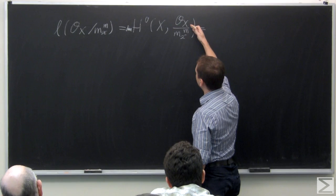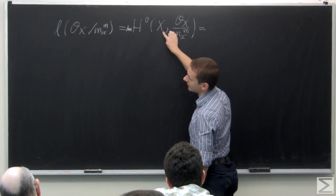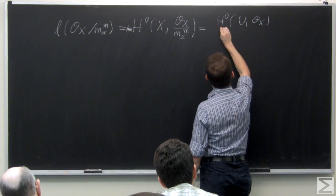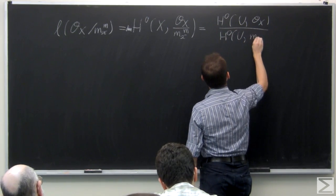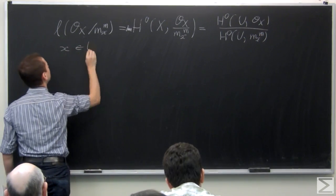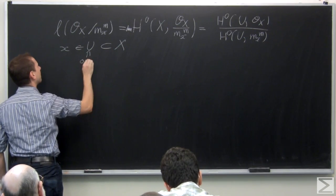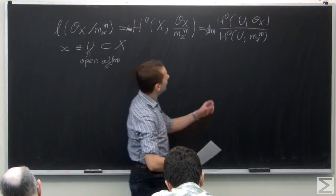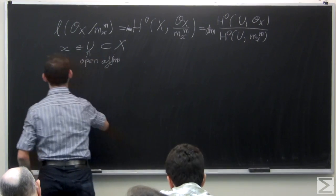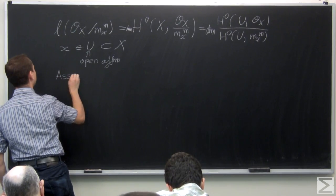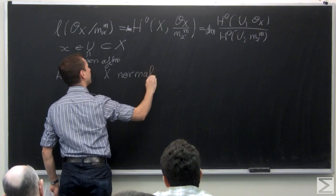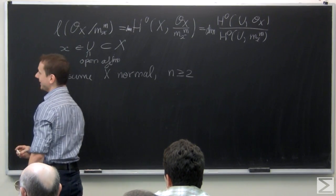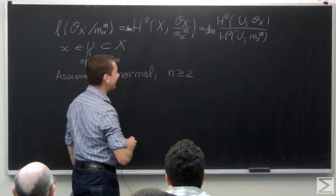Another way of looking at it is as a ratio of h^0. I need to restrict to an affine neighborhood U containing x, so I can see this as h^0(U, O_X) / h^0(U, m_x^m) — the dimension of that space. Now if I also assume that x is normal, which we'll keep from now on, and the dimension n is greater or equal to 2, then we have an equality with the dimension of global sections of U outside the point x of m_x^m.